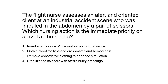1. Insert a large-bore IV line and infuse normal saline. 2. Obtain blood for type and cross-match and hemoglobin. 3. Remove constrictive clothing to enhance circulation. 4. Stabilize the scissors with sterile bulky dressings.